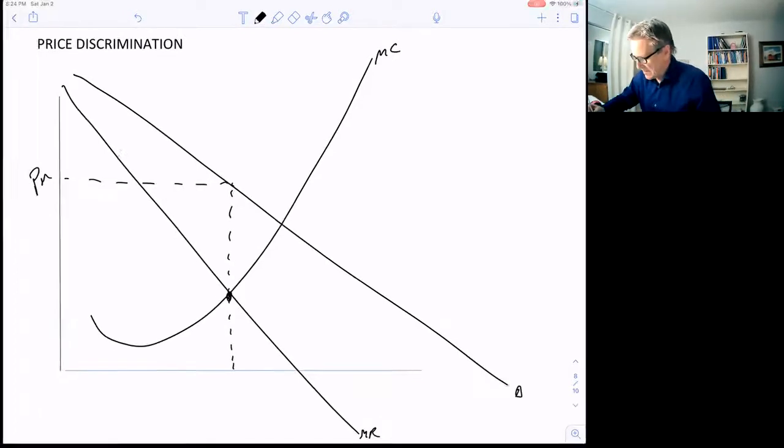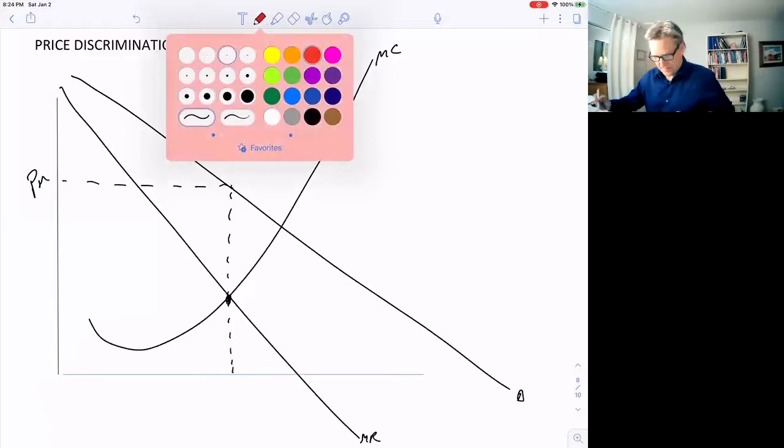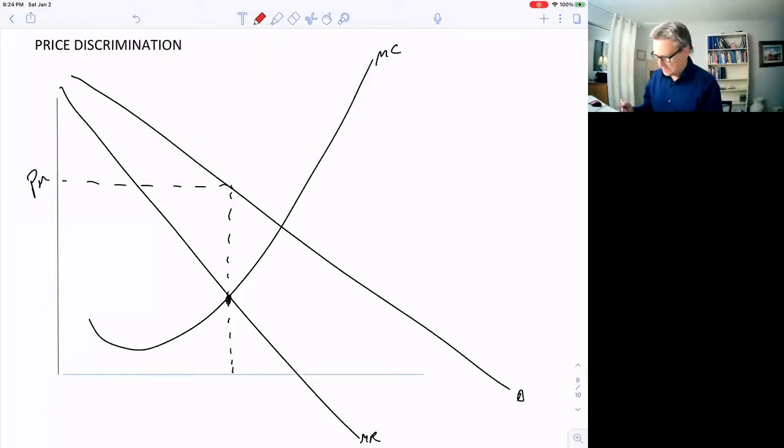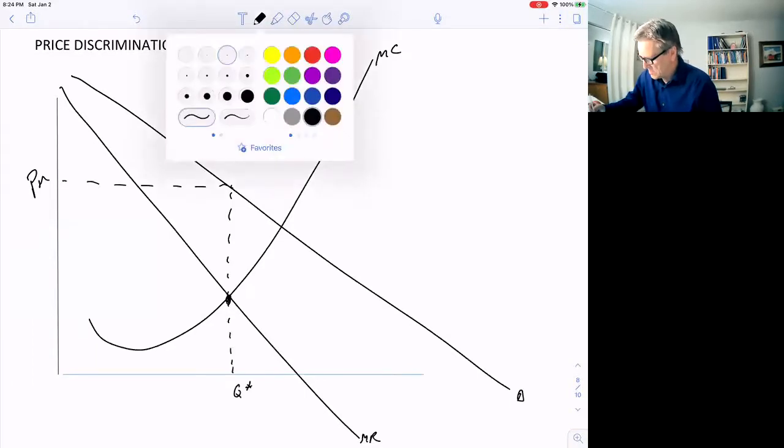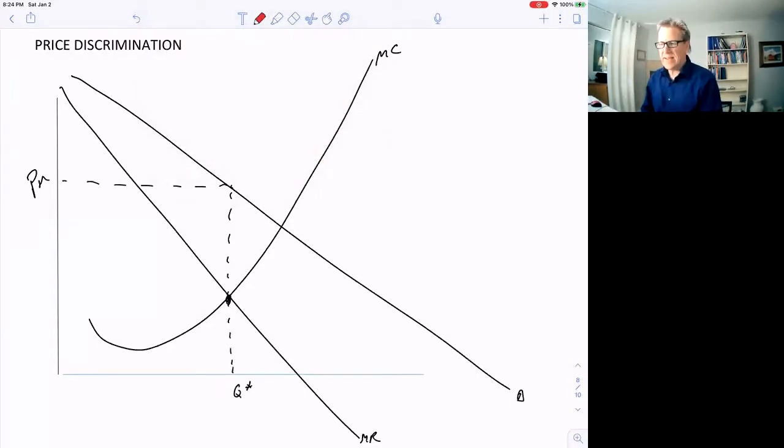So if you think about it here, what if the monopolist was able to, if this is Q star here, what if they were able to take the first half that they produced? This quantity here, Q star divided by two. And sell it to these people way up on the demand curve. And we'll call that price H, high price, higher than monopoly price.